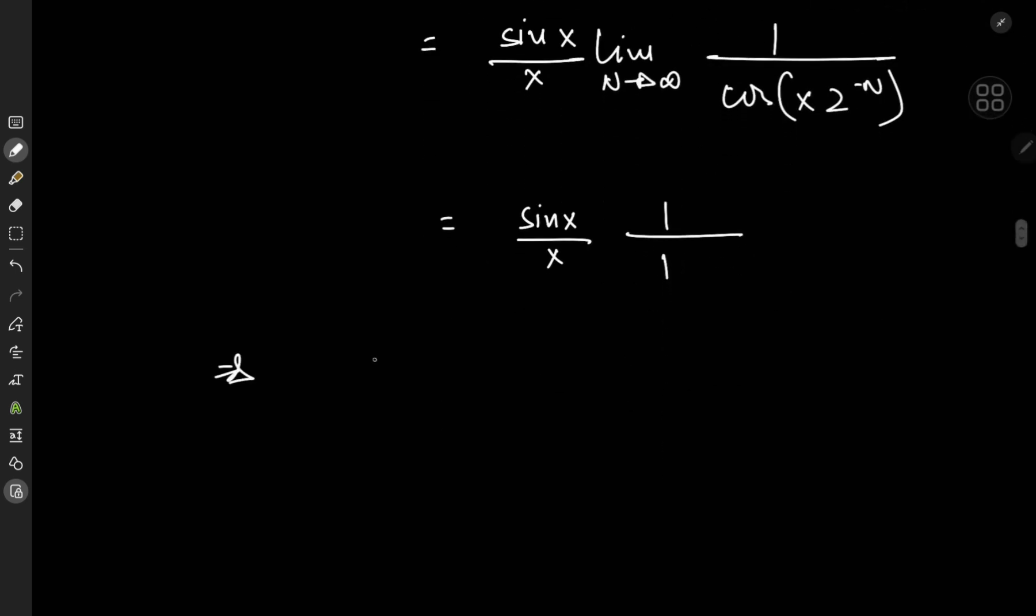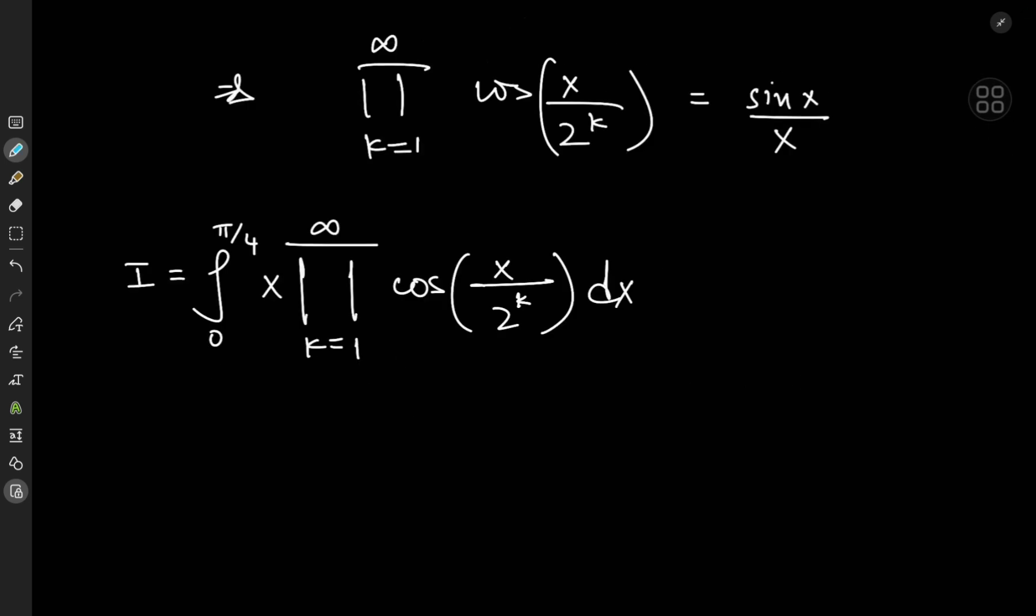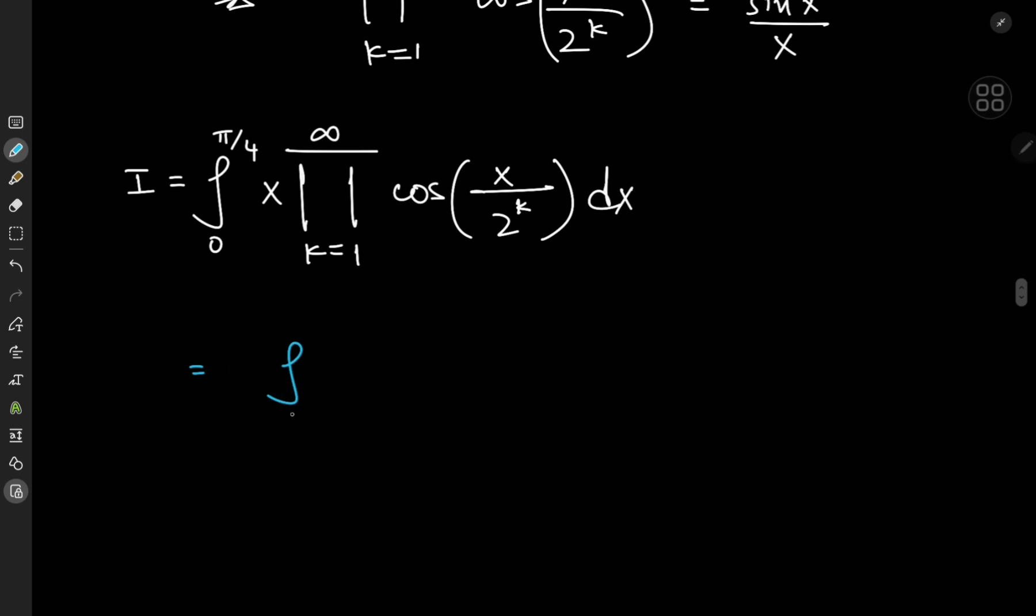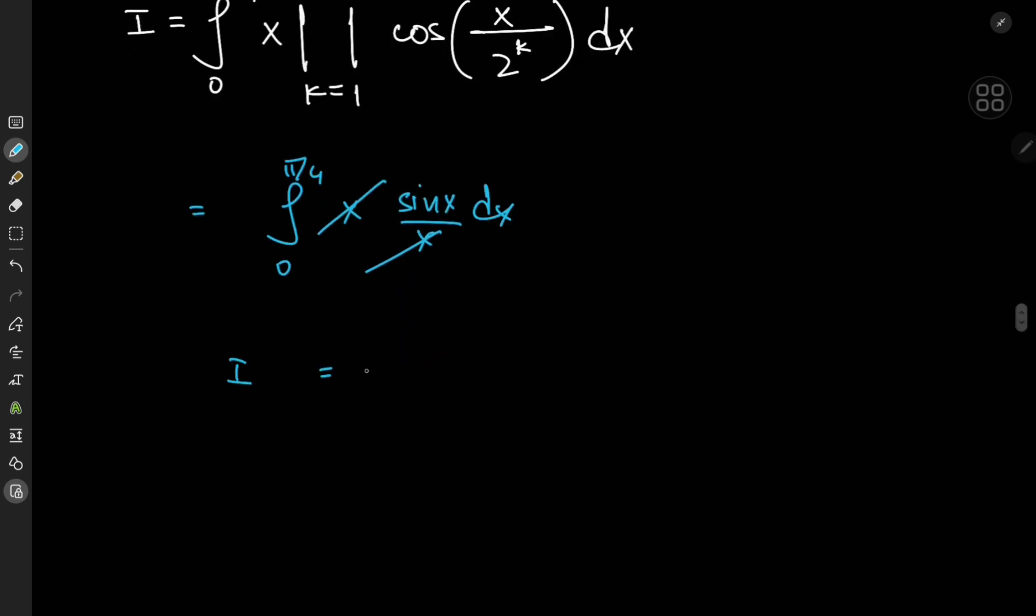So all of this means that the infinite product over the positive integers k of cosine of x divided by 2 to the k equals sine x by x, which is beautiful. So now I can return to the integral, and we can write this as the integral from 0 to pi by 4 of x times the product, which sorted out to sine x by x, and we have some cancellation here, meaning that I equals the integral from 0 to pi by 4 of sine x dx.